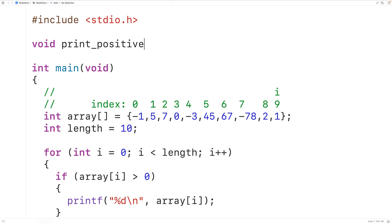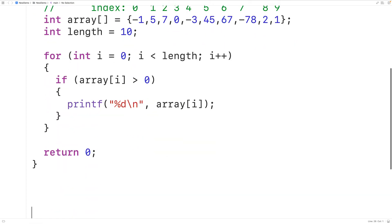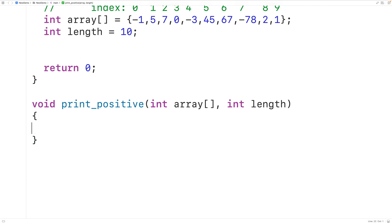The function will accept the array as an argument so we'll have int array for that parameter there and the function will also have the array length as an argument so we'll have length for that parameter there. We'll then copy this and paste it down here and then for the function body we're actually just going to take this logic here and cut it and then paste it into the function body because we've used the same parameter names here as our variable names from before so it's going to work as it is written.